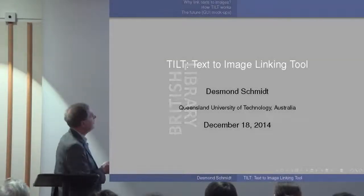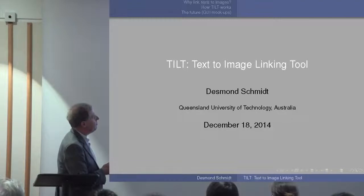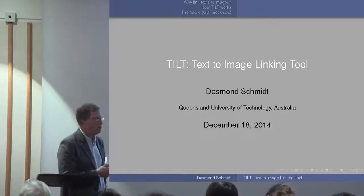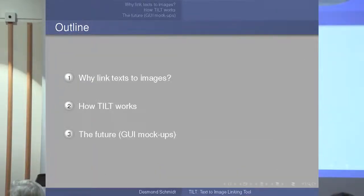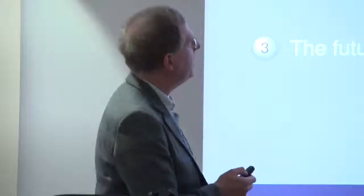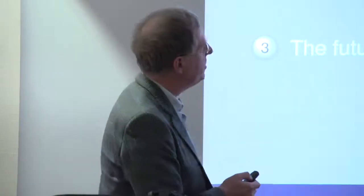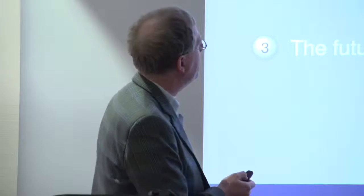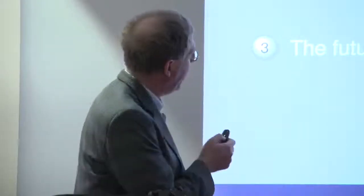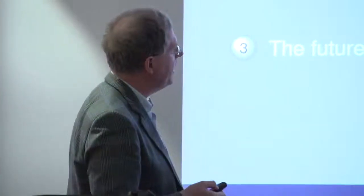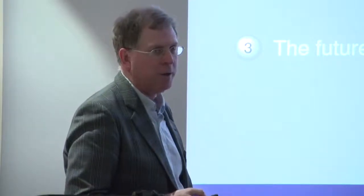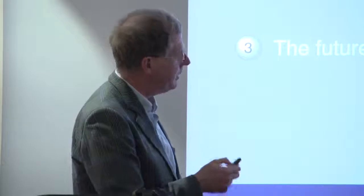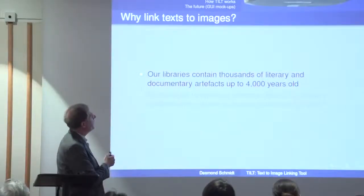I'm going to talk about this text-to-image linking tool, which we've been working on for a couple of years. The first question I'll look at is why you should link text to images — it seems perhaps a silly thing to do. Then I'll look at how the software works and the unfinished parts, the GUI mock-ups. I think it's important to show how we envisage interaction to facilitate users doing things automatically as far as possible.